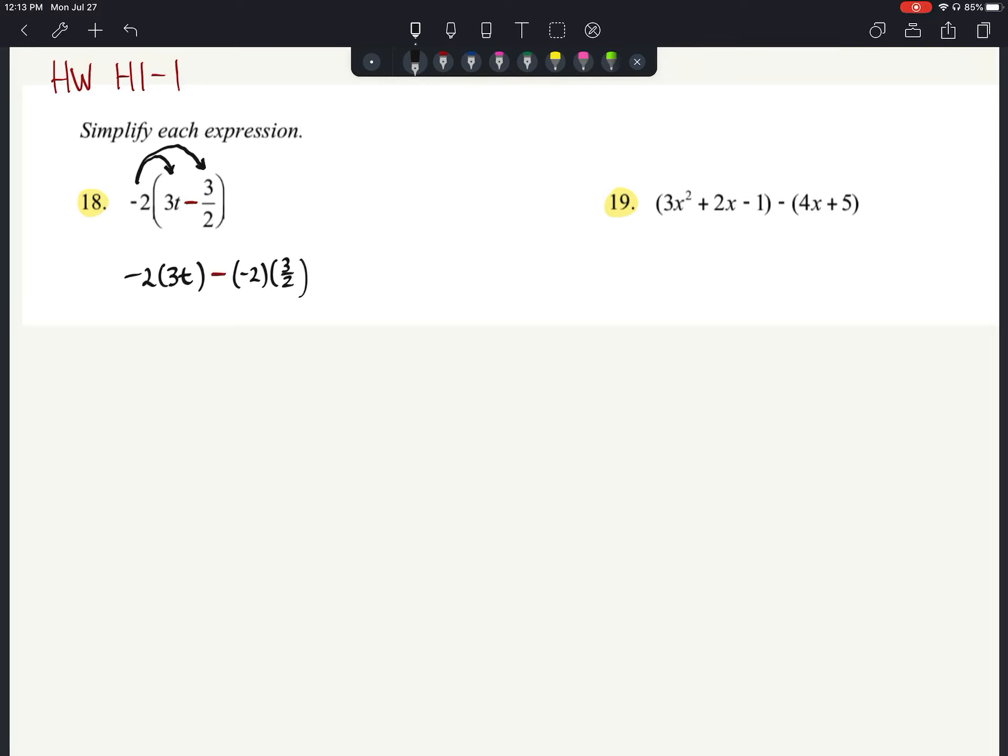Okay, so that negative 2 is being multiplied times both parts of the quantity. Negative 2 times 3t is going to give us negative 6t. We have minus, and then I've got negative 2 times 3 halves.